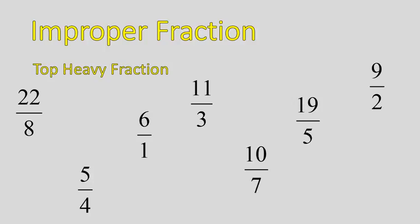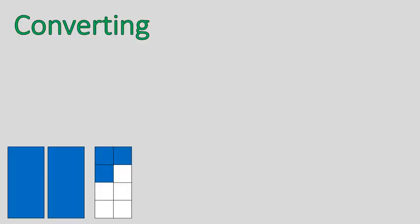All right, so what we're going to be doing today is converting between these numbers. We are going to convert from a mixed number into an improper fraction. So just a bit of an understanding. You can see the picture I have here. This represents two whole rectangles and 3 eighths of a rectangle.